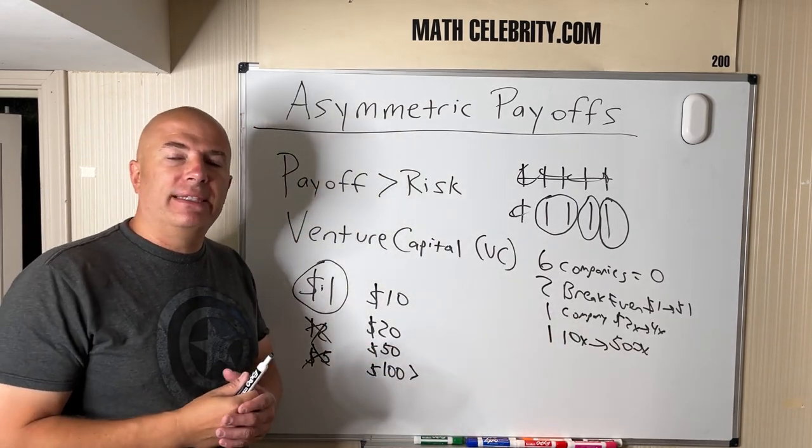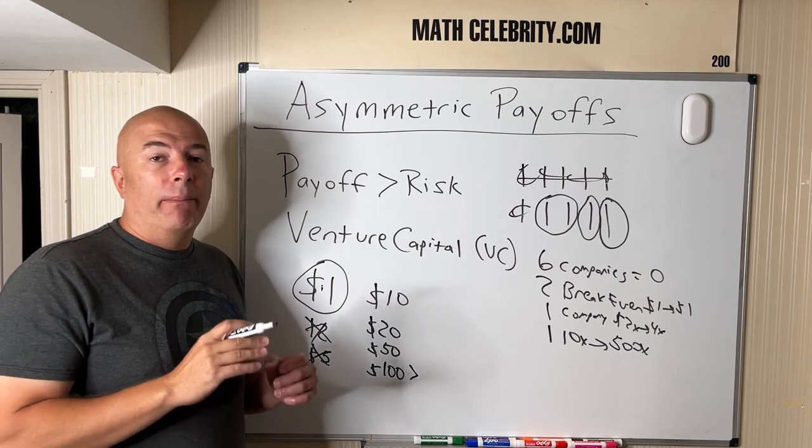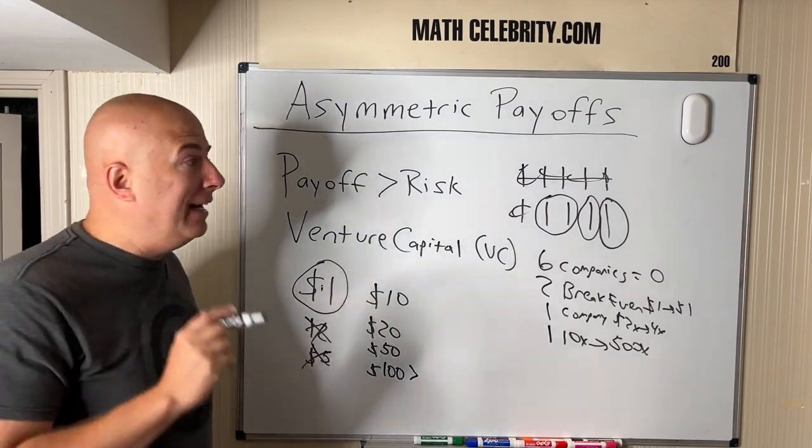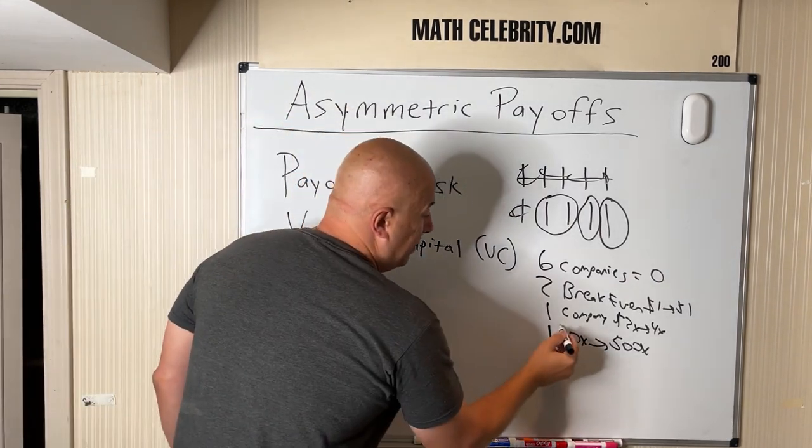if they're losing on six, breaking even on two, and making little money on one, how are these companies number one staying in business and number two making money hand over fist? And the answer is asymmetry.